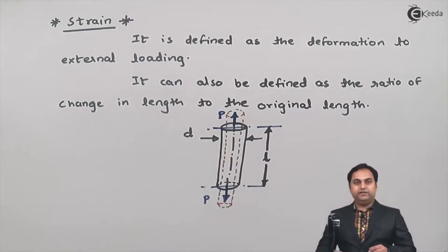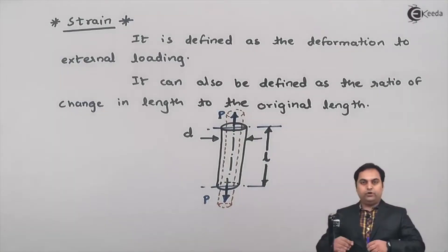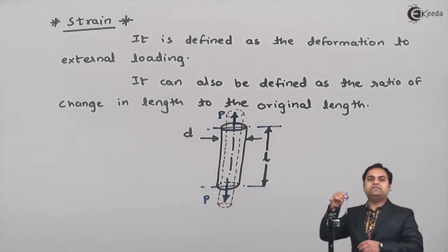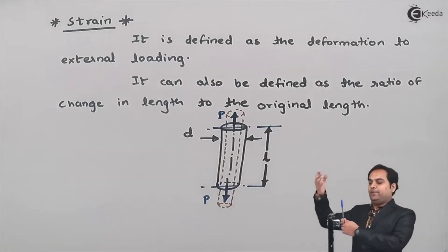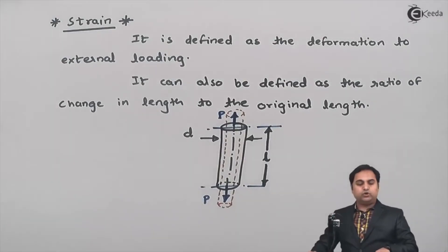This is very clear. When we are pulling a rod, I can take this pen as an example of a rod. If I am pulling this pen, then the length of this pen will go on increasing and its diameter will go on decreasing.